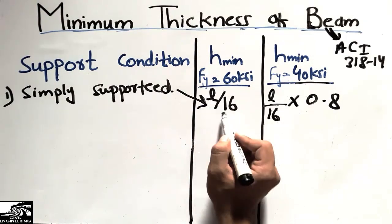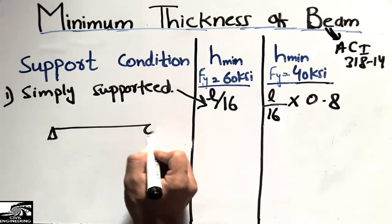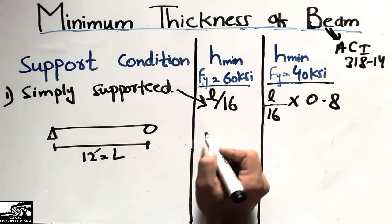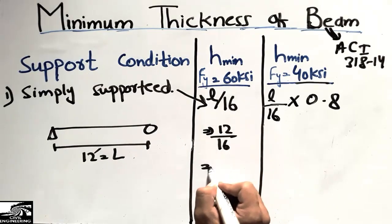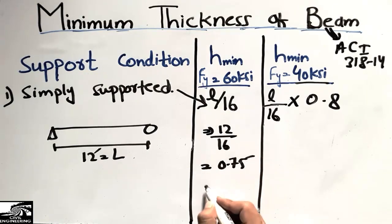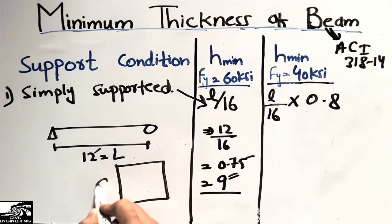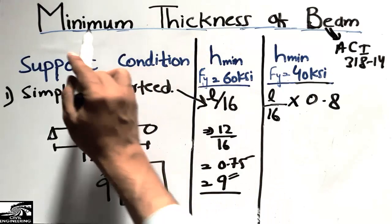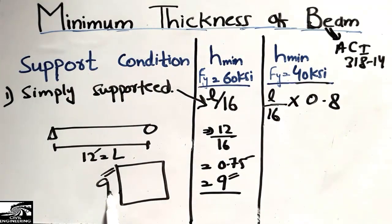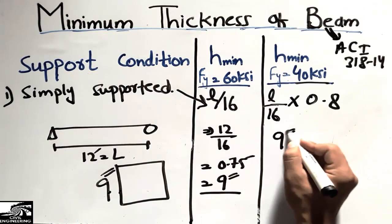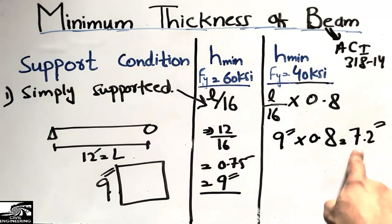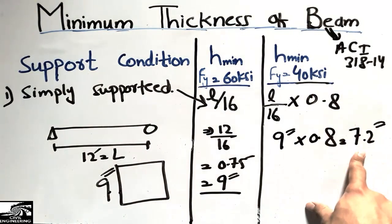Taking an example with a beam length of 12 feet: 12 divided by 16 gives 0.75 feet, which converts to 9 inches. So for Grade 60, the minimum beam thickness must not be less than 9 inches. For Grade 40, multiplying 9 inches by 0.8 gives 7.2 inches — the beam thickness must not be less than 7.2 inches.